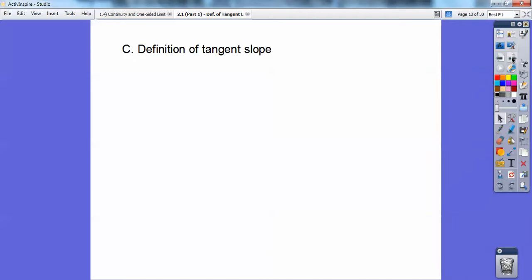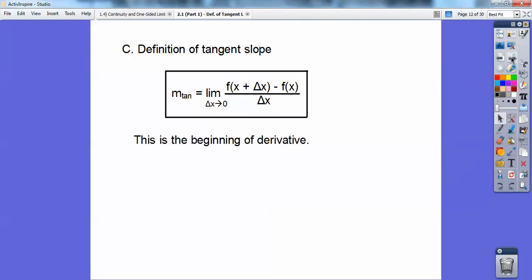The definition of tangent slope is: the slope of your tangent is the limit as Δx approaches 0 of [f(x + Δx) - f(x)]/Δx. We're going to use this to find slopes of certain points. This is the beginning of derivatives.